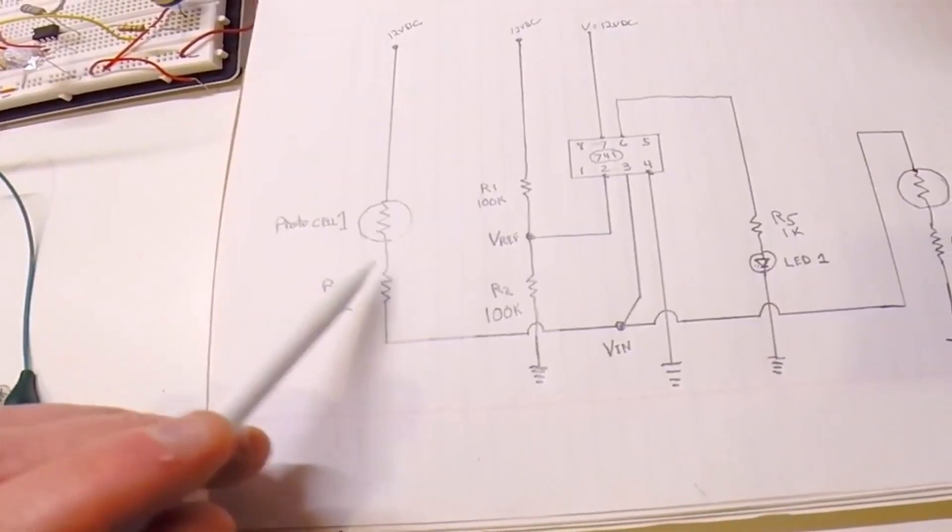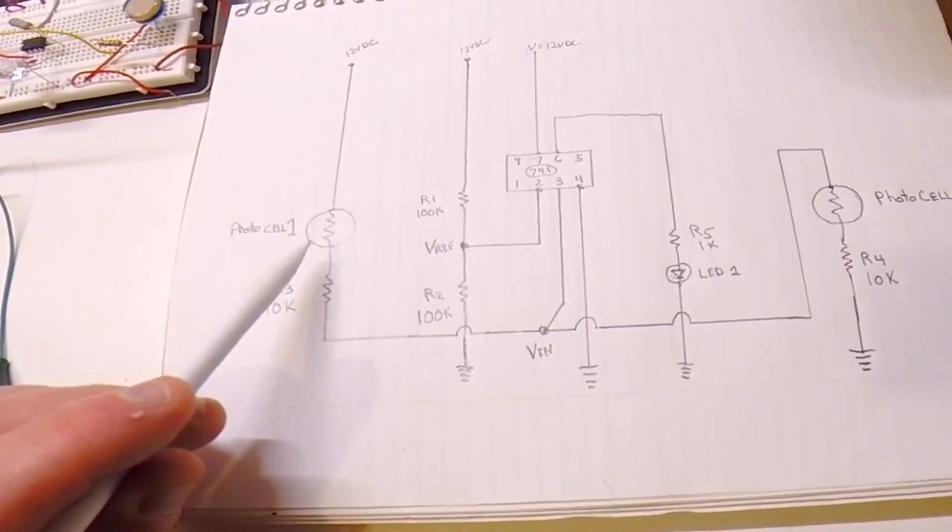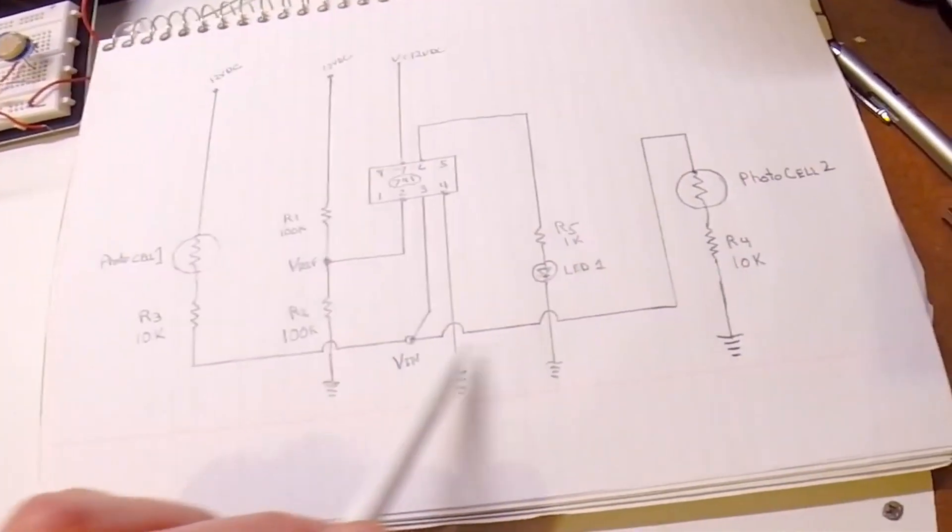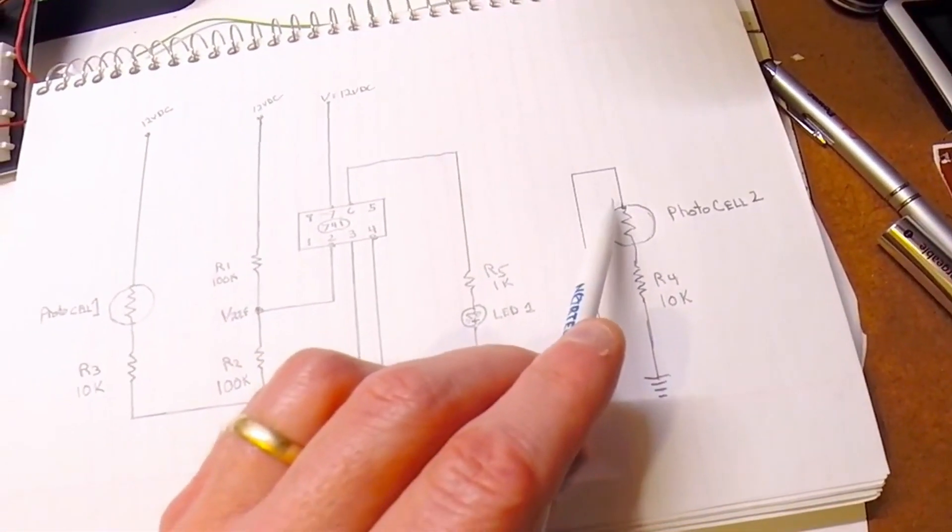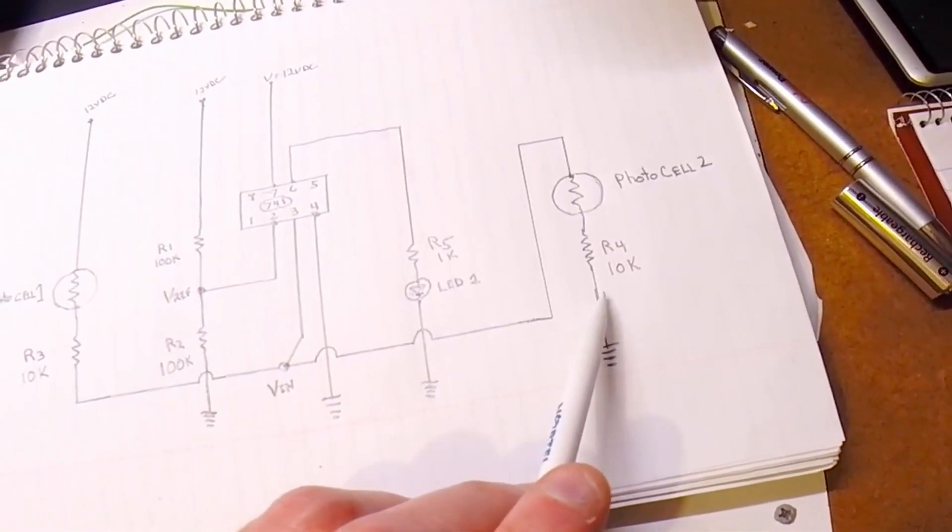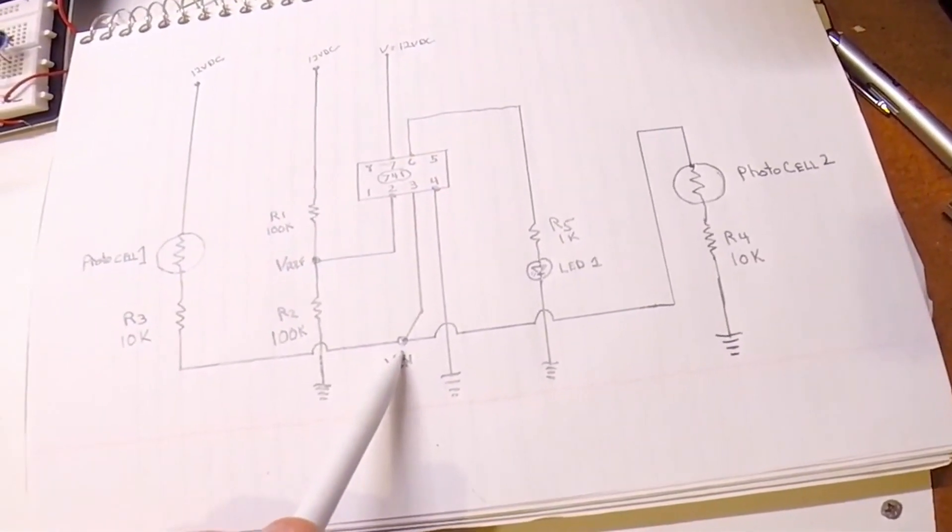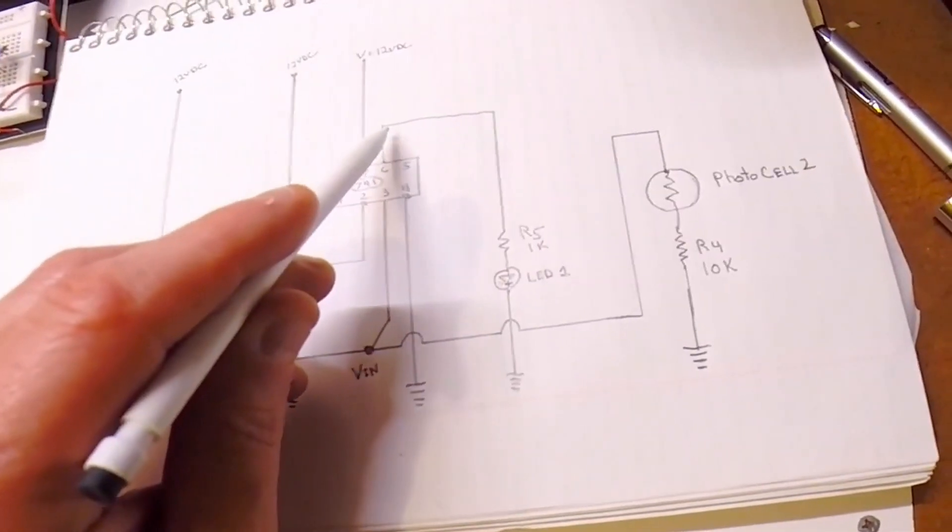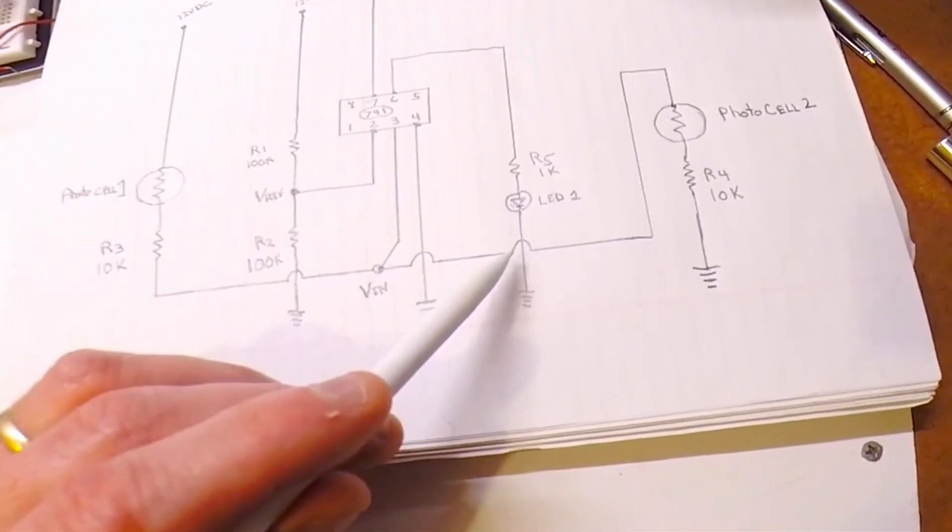So you've got a photo cell on a 10k resistor here. There's V in, which is a reference voltage derived from photo cell one, photo cell two, and their 10k. So if this V in gets above V ref, then this energizes the LED or the theoretical motor driving your solar array.